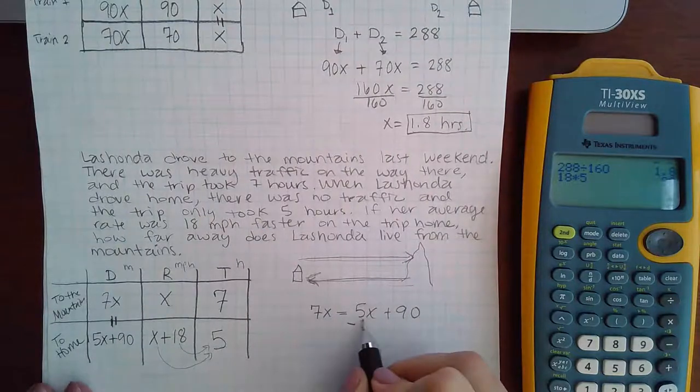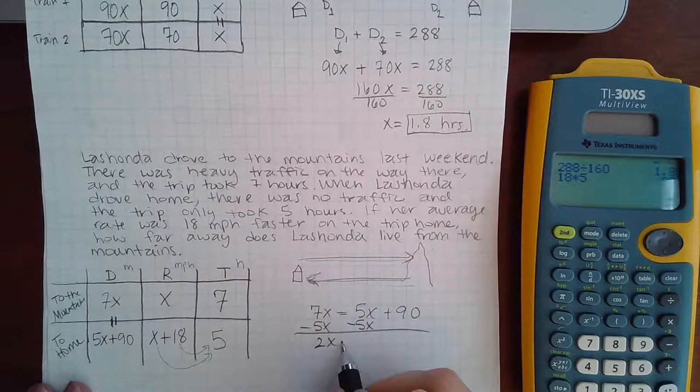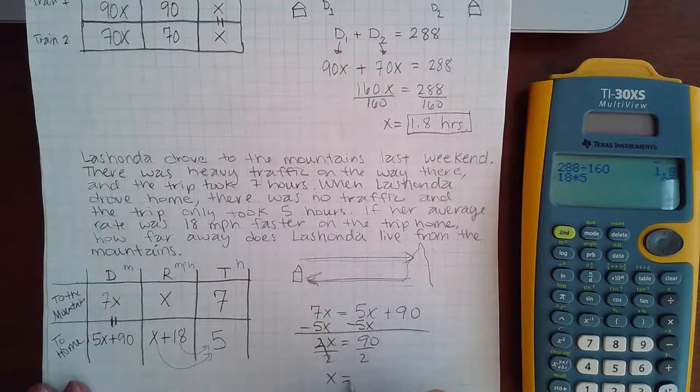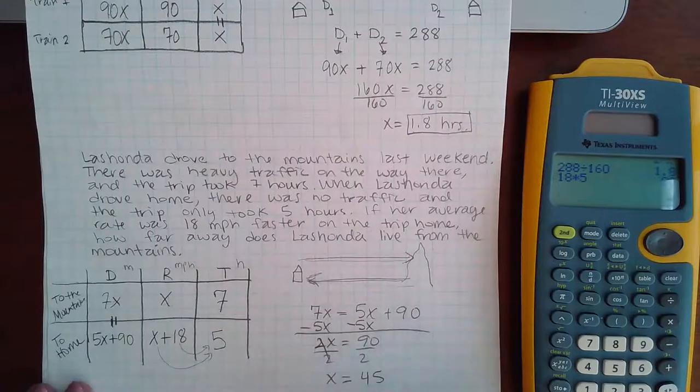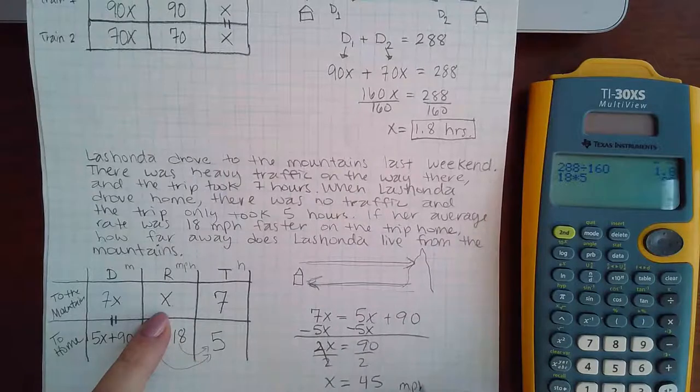And then if I move my term over to the left side, and then divide by 2, I get 45. And X is in the rate column, so that means this is miles per hour.